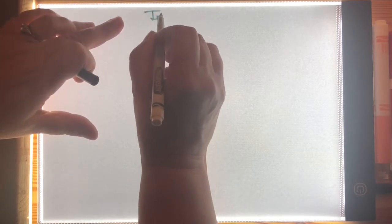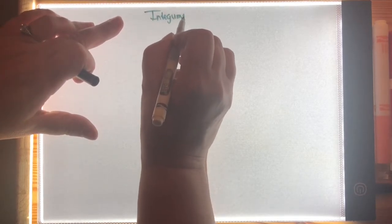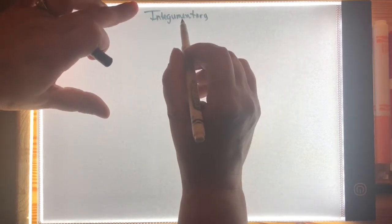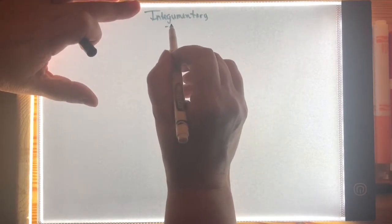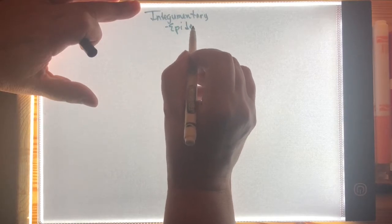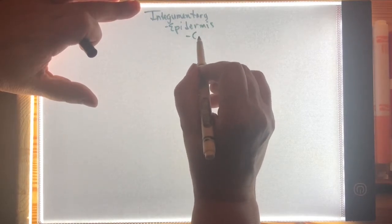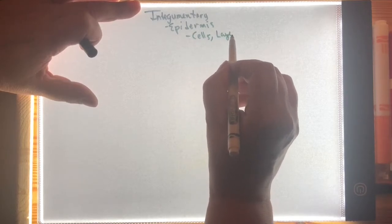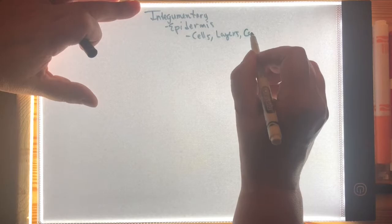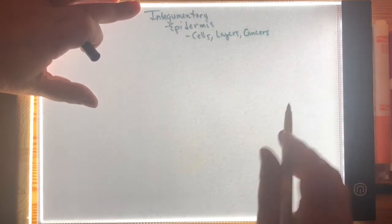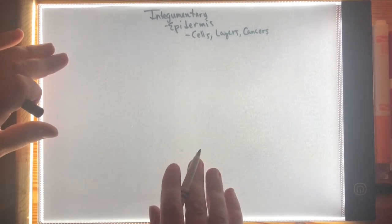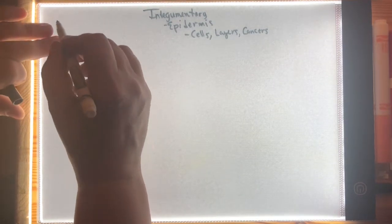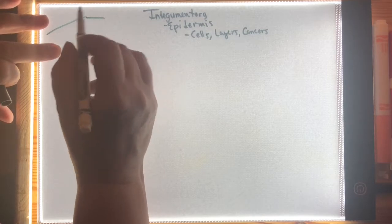When we discuss the integumentary system, it's worth noting that the structures of the integumentary system are skin, hair, and nails. One function of the integumentary system is protection. There is more to it than that, but what we're discussing today is purely protection. So today we're discussing the epidermis — the cells, the layers, and the most common types of skin cancers, all three of which are cancers localized mostly to the epidermis.